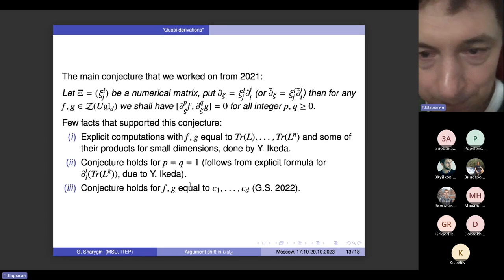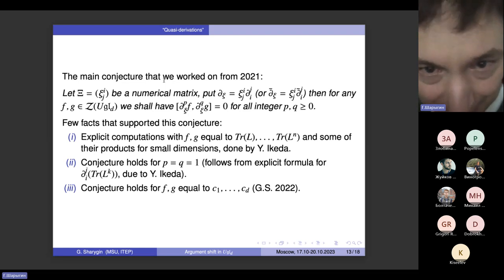So now what is the conjecture which we—I mean me and my PhD student Yasushi Ikeda—worked on from 2021. Let Xi capital be a numerical matrix, and we consider the operator partial sub Xi composed of just quasi-derivations multiplied by coefficients of this matrix. This operator gives you a map from UGLD to UGLD, and you can apply this operator to any two elements in the center of the universal enveloping algebra. We conjectured first and then we proved that the commutator of these two elements will vanish.